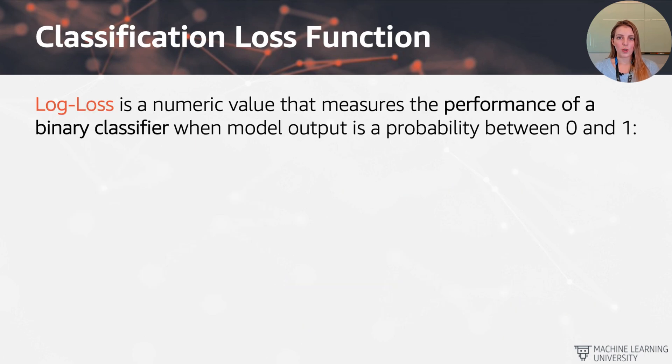So now we can start talking about the loss function. And a commonly used loss function in the case of classification is going to be the log loss. So the log loss now is going to be a numeric value that measures the performance of a binary classifier when the model output is a probability value that ranges between 0 and 1. And that is exactly what we've seen on the previous slide. The sigmoid function is going to give us exactly that, a value between 0 and 1. So we can now use log loss to quantify the loss.